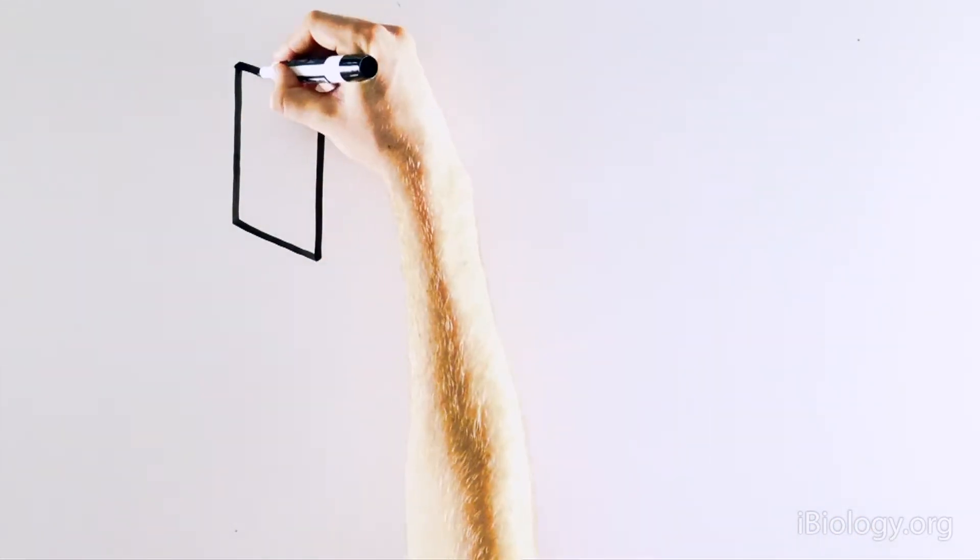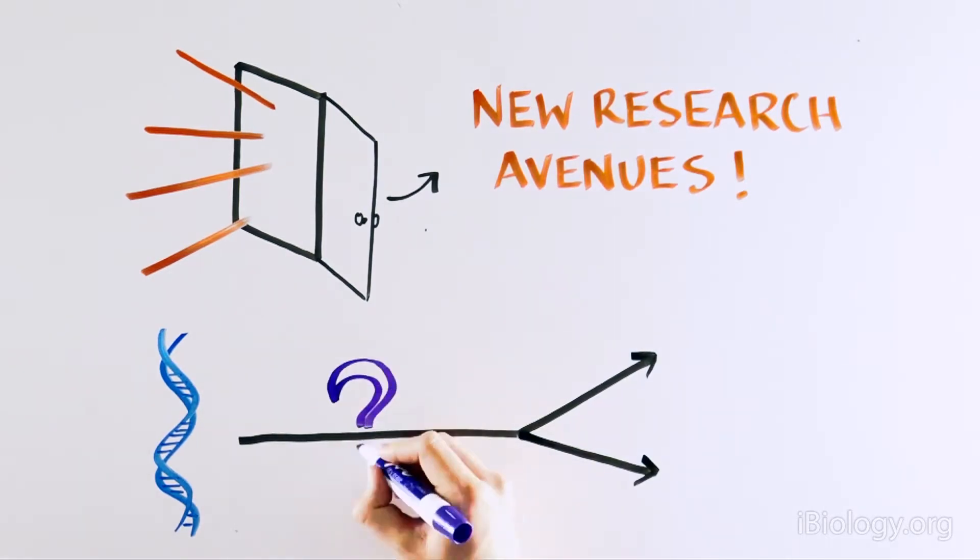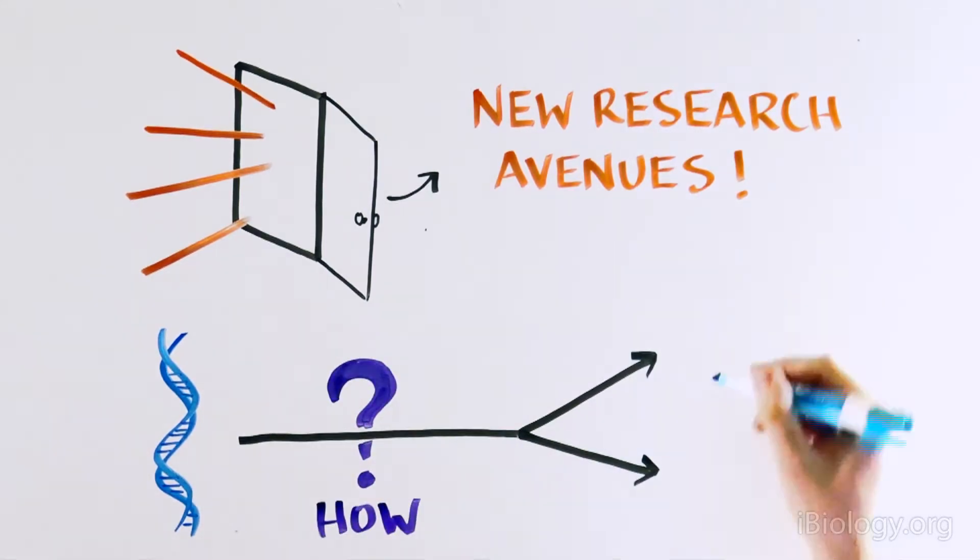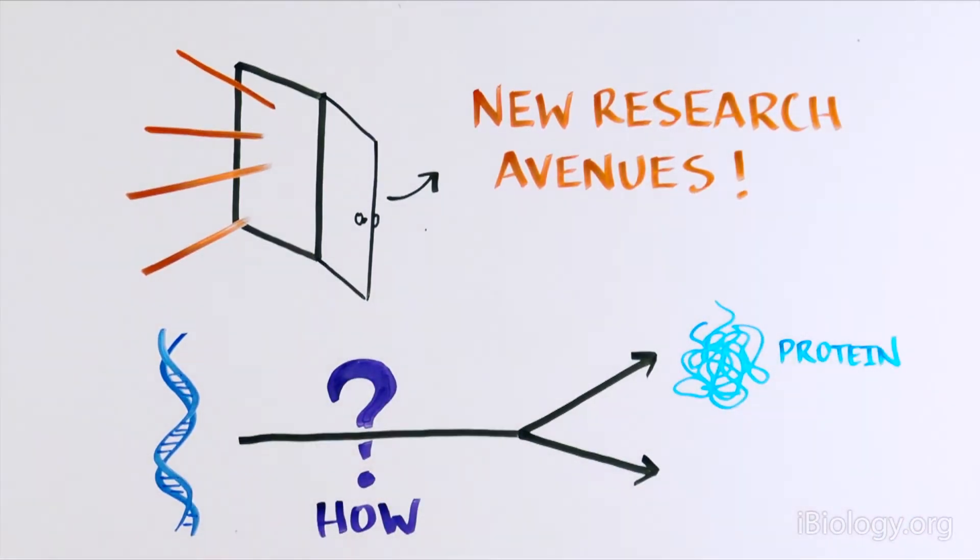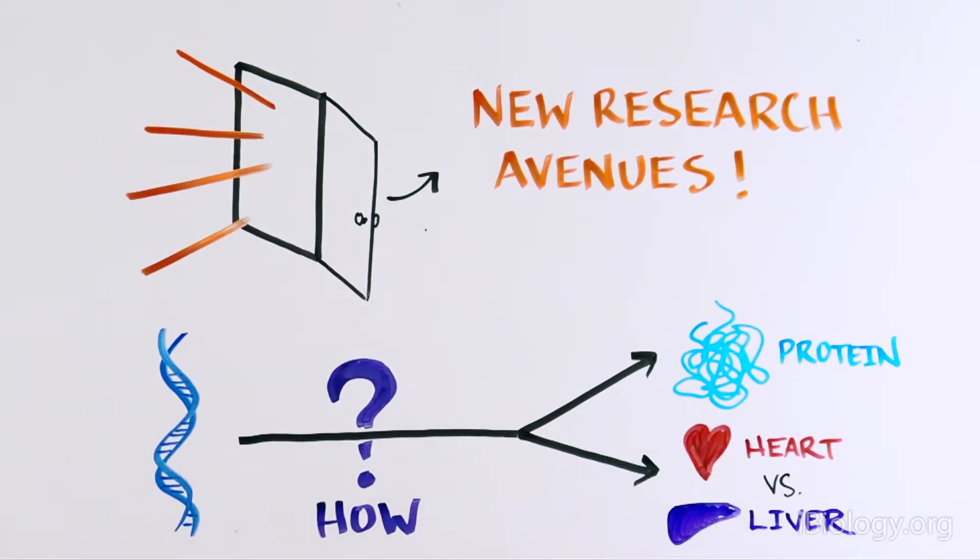This exciting finding opened up many new doors and research avenues. Because DNA is the command center of the cell, we could now study how DNA gives orders for the cell to follow. What controls the ability of DNA to make protein? How does one cell know it's a heart cell and another cell know it's a liver cell if they all have the same DNA?